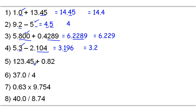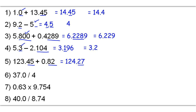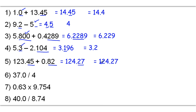123.45 plus 0.82 gets me a raw answer of 124.27. Because this has 2 decimal places and this has 2 decimal places, we want our answer to have 2 decimal places. Since it already does, our final answer remains the same: 124.27.